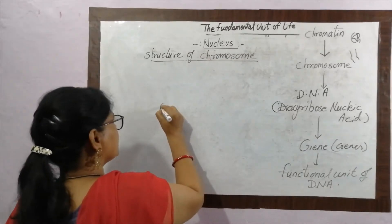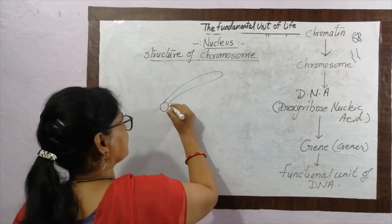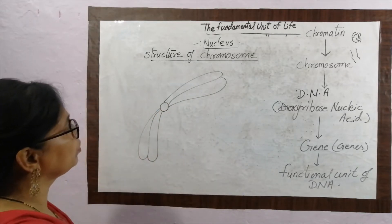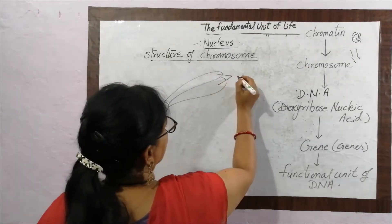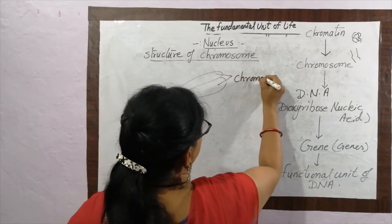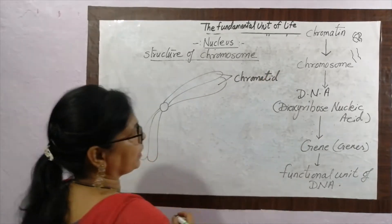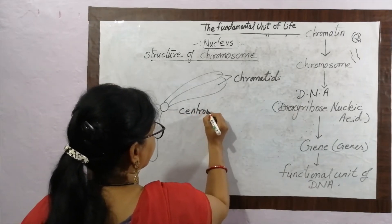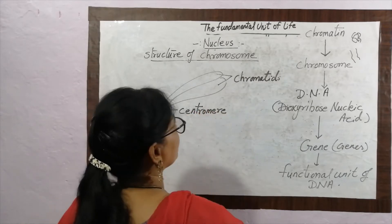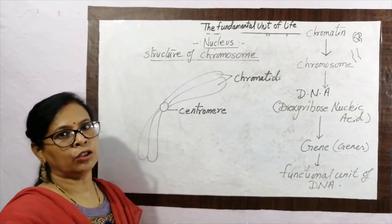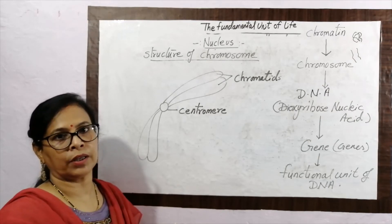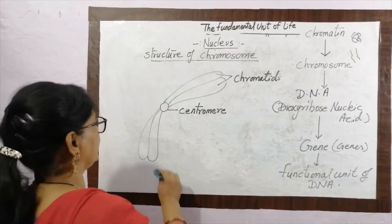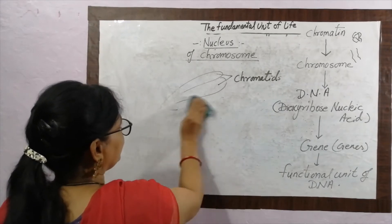The chromosome is composed of two chromatids. These are called chromatids, and the point joining them is called the centromere. A chromosome is formed by two chromatids joined at the centromere. This is the structure of the chromosome. Next is the characteristics of the nucleus.